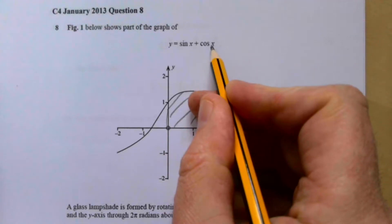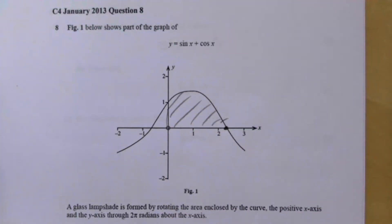So we're going to have to set this equal to zero. So if we go sine x plus cos x equals zero, I would take the cos x over the other side.